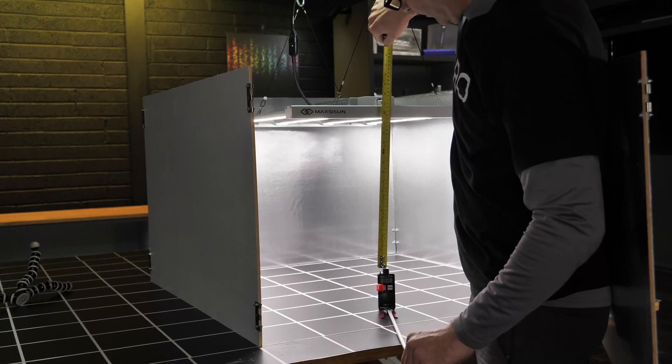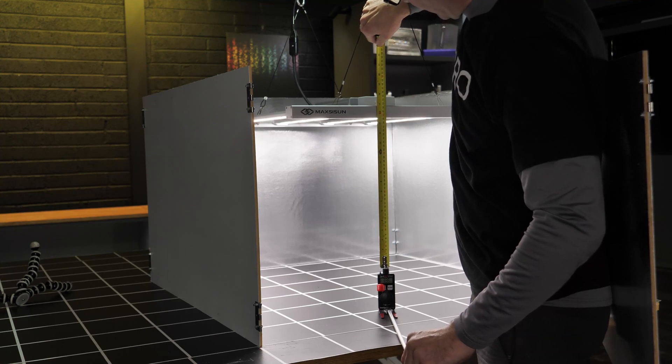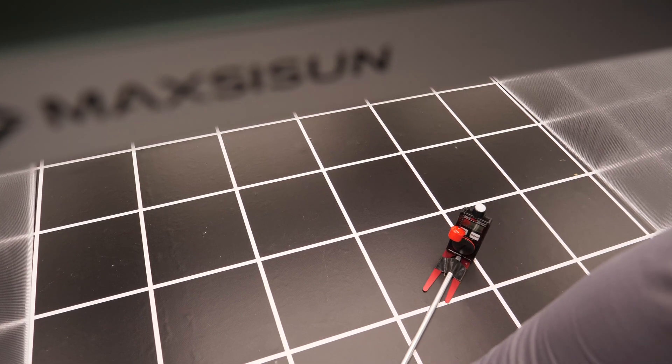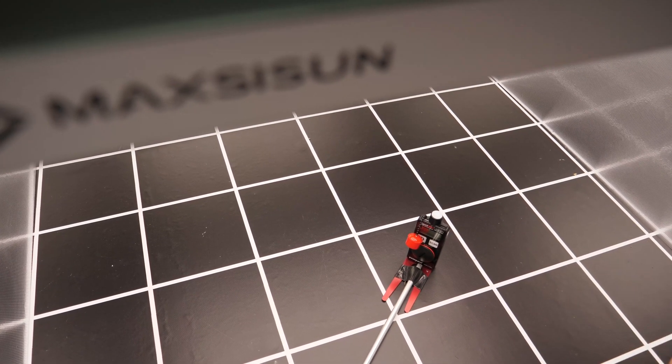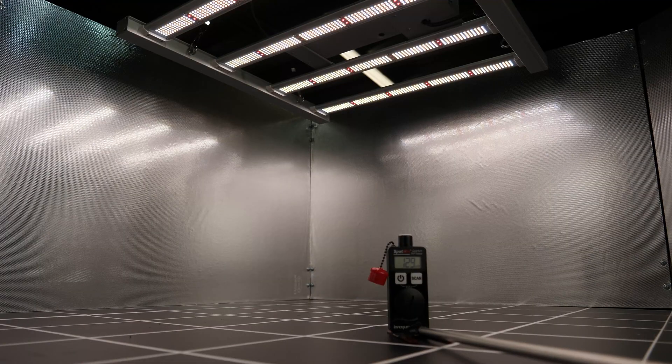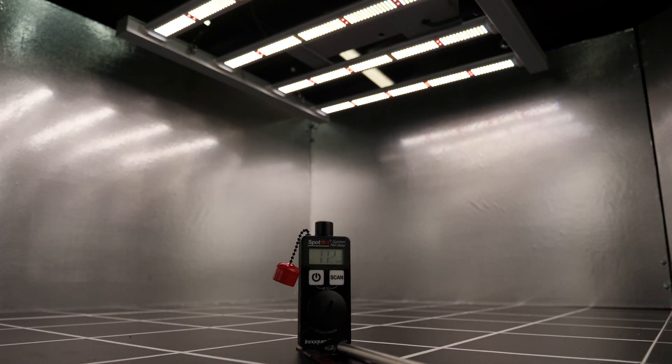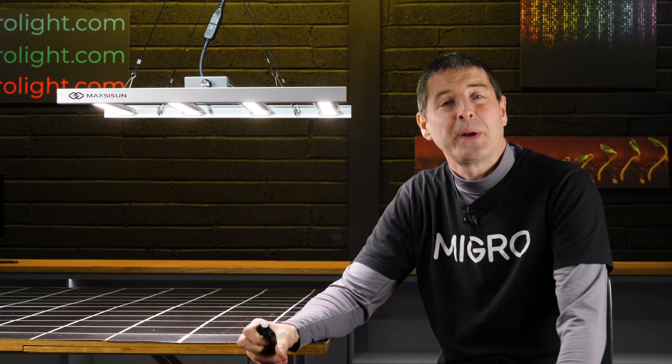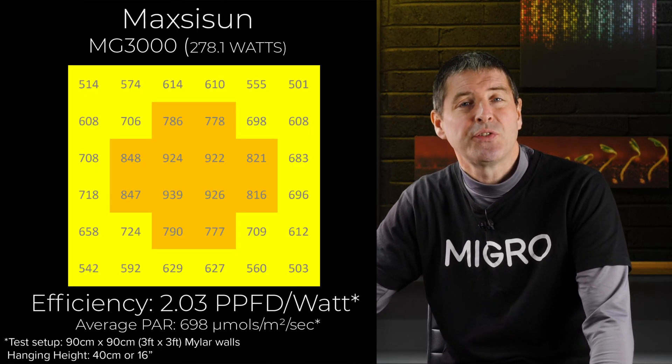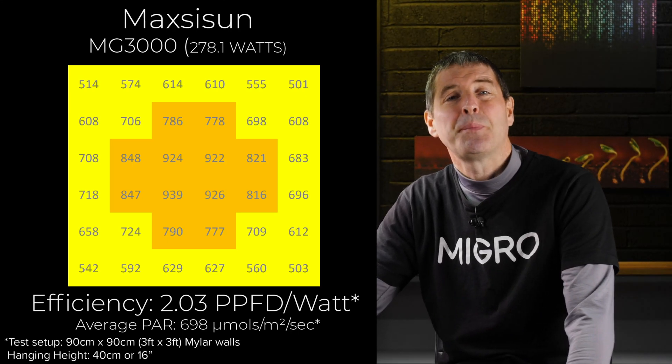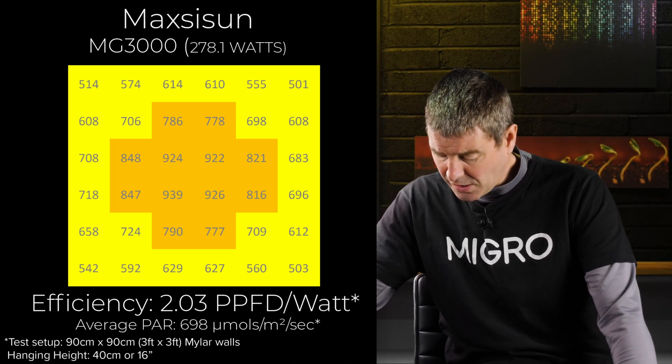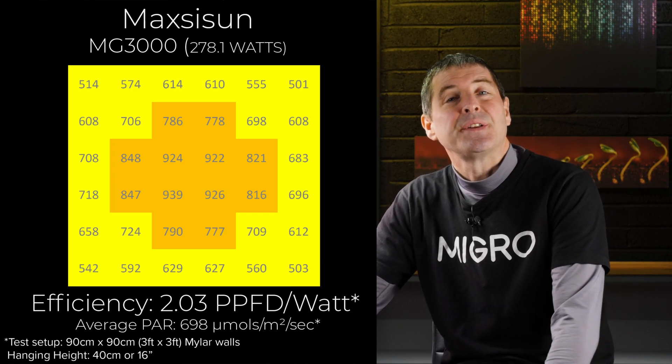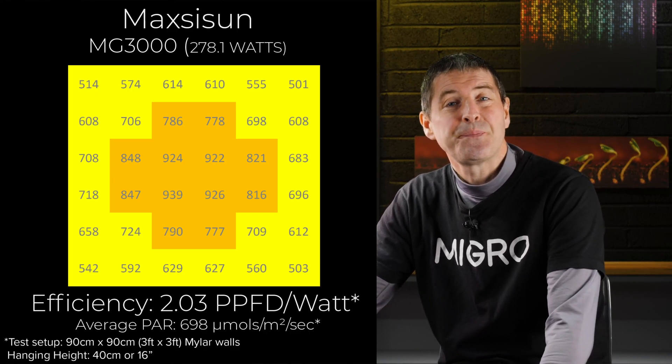I got my quantum parameter and tested across the grid, so six by six measurements or 36 power measurements in total. As you can see here the light gave really good spread across the three foot by three foot area and got an average power of 698 micromoles.